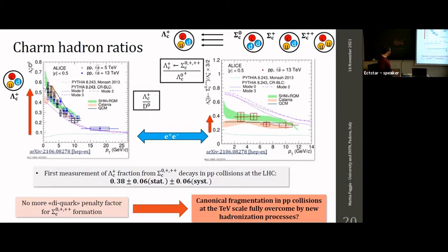An important remark is that none of these models include a penalty factor for Sigma_c formation — there is no penalty related to the diquark structure as in conventional fragmentation. At this point, can we say that conventional fragmentation in proton-proton collisions at the TeV scale is fully overcome by new hadronization processes? According to this comparison we may say yes — however, if we go further, we see that we are still far from fully understanding what is going on.